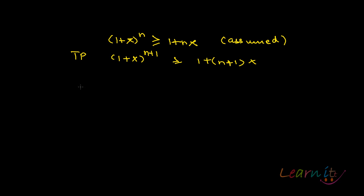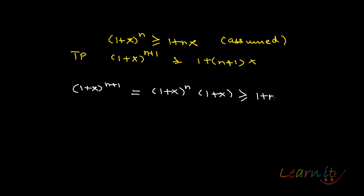Let us start off with 1 plus x to the power n plus 1. I can break it up: this equals 1 plus x to the power n, multiplied by 1 plus x. That should be greater than or equal to 1 plus nx, multiplied by 1 plus x. We say so because 1 plus x to the power n is greater than or equal to 1 plus nx — which we have assumed — and 1 plus x is greater than or equal to 1 plus x, which we have proved.